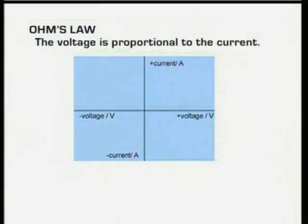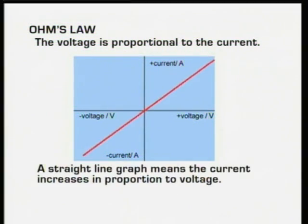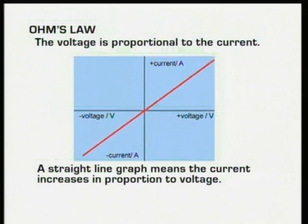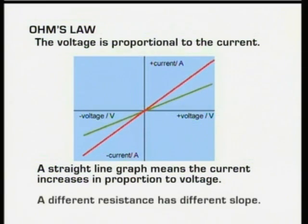If we plot a graph of current against voltage for a normal resistor, it's a straight line. As you increase the voltage, so the current increases in proportion — double the voltage, and it doubles the current. A bigger resistance needs a bigger voltage to push the same current through it. The graph will still be a straight line, but with a flatter gradient.